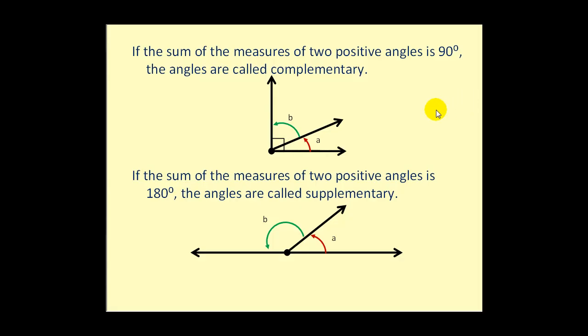Let's go ahead and take a look at complementary and supplementary angles. If the sum of the measures of two positive angles is ninety degrees, the angles are called complementary. So in this case, we have the measure of angle A plus the measure of angle B equals ninety degrees.